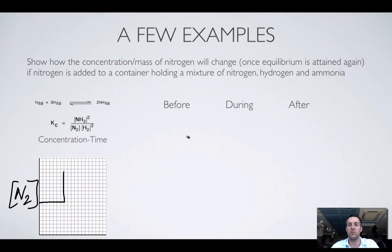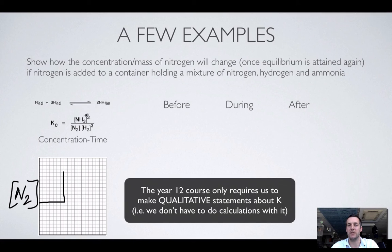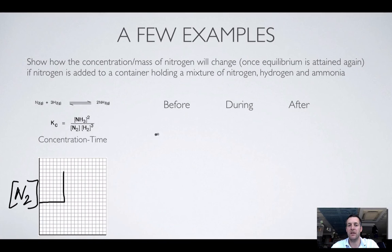I'm going to go ahead and do something which we don't really have to do at WACE, which is to plug some numbers into here. Let's just imagine that every one of these concentrations was 2 before we made the change. In that case, K would be equal to 2 squared over 2 times 2 cubed. And we can cancel two of our 2s, and we're left with 1 over 4. So the value of our equilibrium constant in this imaginary situation is 1 over 4.